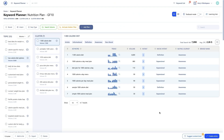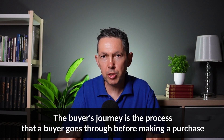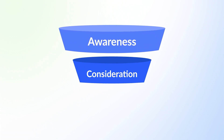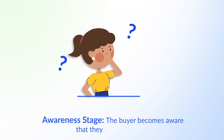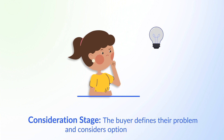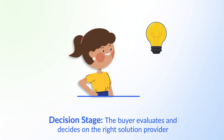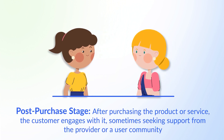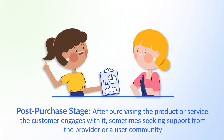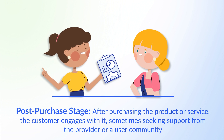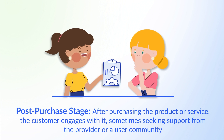The next keyword insight is the buying journey, which displays the searcher's position in the purchase process. The buyer's journey is the process a searcher goes through before making a purchase. We go through a predictable process of becoming aware, considering options, evaluating, and finally making a purchase. The stages are: Awareness, where the buyer becomes aware of a problem; Consideration, where they define their problem and consider solutions; Decision, where they evaluate and choose a solution provider; and Post-purchase, where the customer engages with the product, sometimes seeking support or receiving follow-up contact to build brand loyalty.